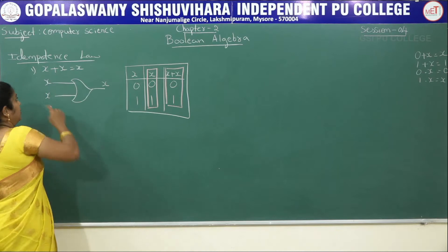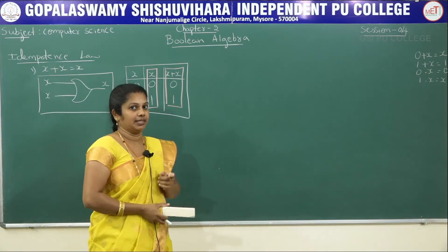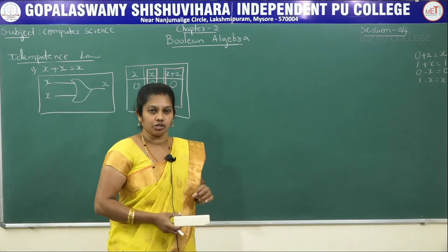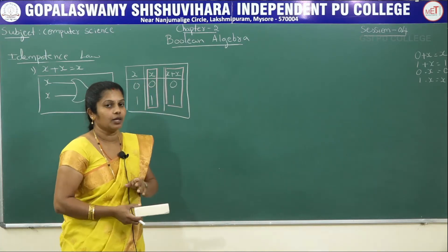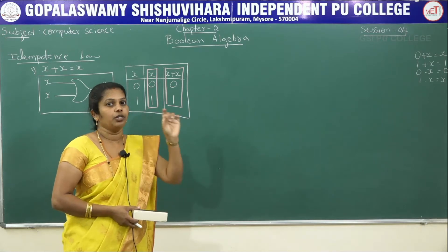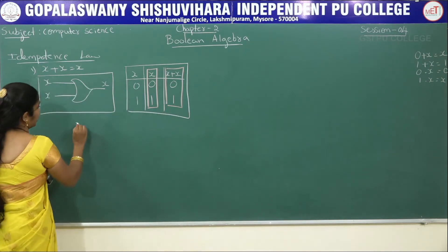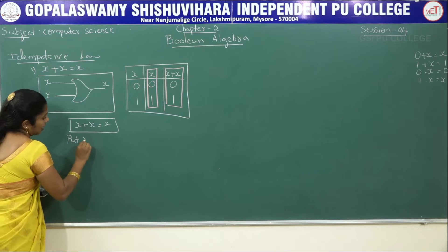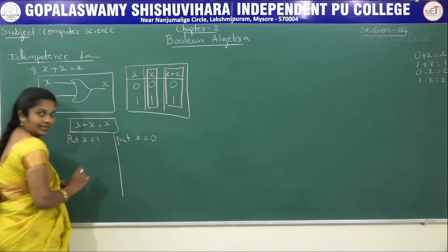This is the circuit diagram, and this is the truth table. Now, solving by perfect induction method: we put x equals 1 one time, and x equals 0 another time. In the perfect induction method, we just substitute these values and solve, rather than using postulates as in the algebraic method.